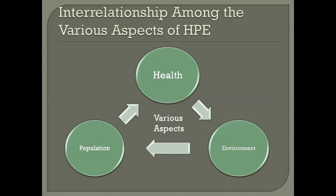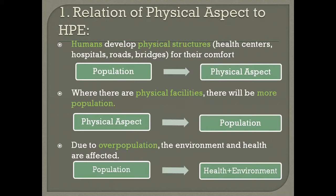Today we are going to read about the interrelationship among the various aspects of health, population, and environment. We have already discussed the diagram about this interrelationship. Today we will read how various aspects — physical, biological, sociocultural, political, psychological, economical, and science and technological — are related to health, population, and environment.